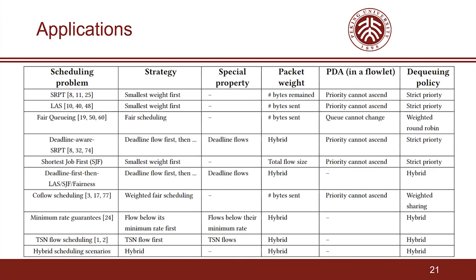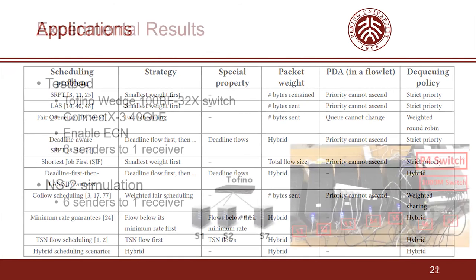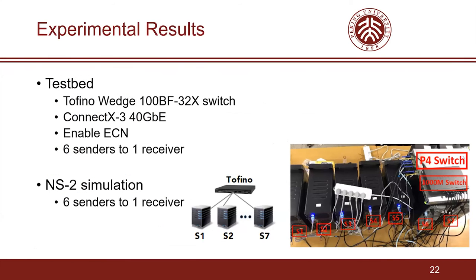In addition to the four well-known flow scheduling tasks described above, Queue Cluster can also be applied to various other flow scheduling tasks. We demonstrate these tasks and their corresponding packet weights, methods of packet disorder avoidance, and dequeuing policies. We have fully implemented our Queue Cluster prototype on a testbed with a Tofino switch and seven servers, where six servers work as senders and one server works as a receiver. We also use NS2 simulation to compare Queue Cluster with other algorithms that cannot be implemented on Tofino switches.